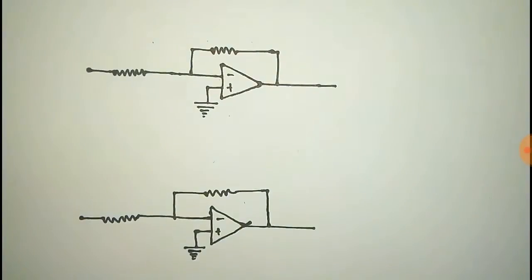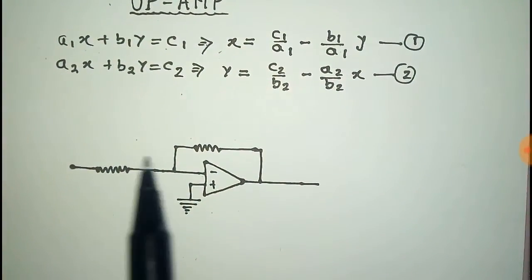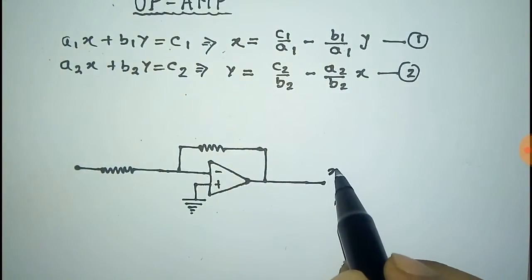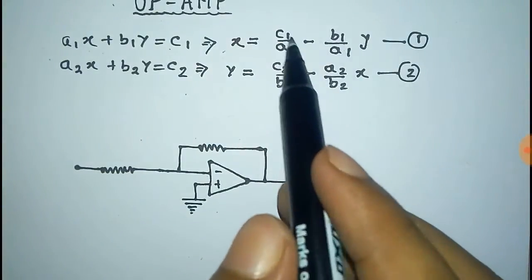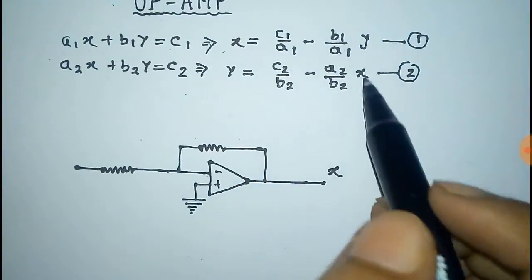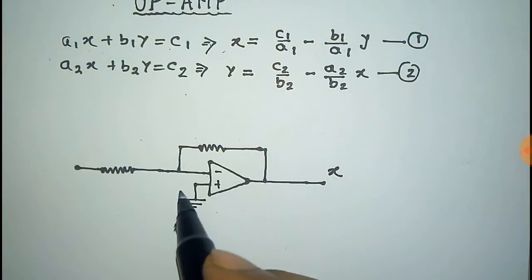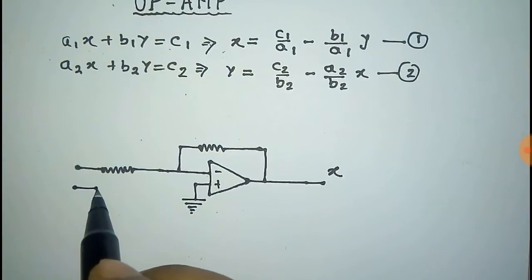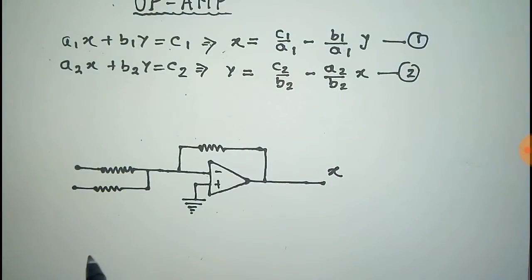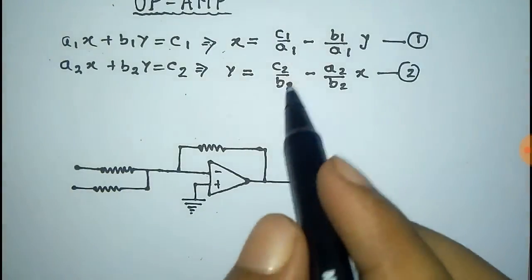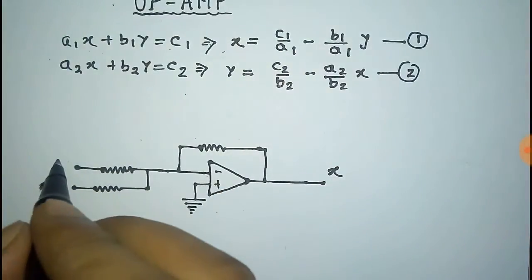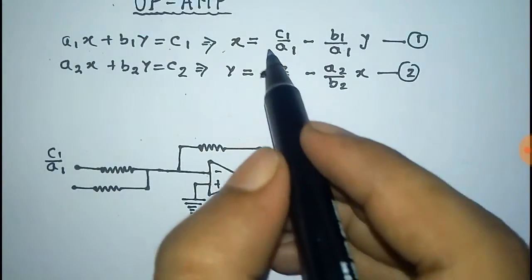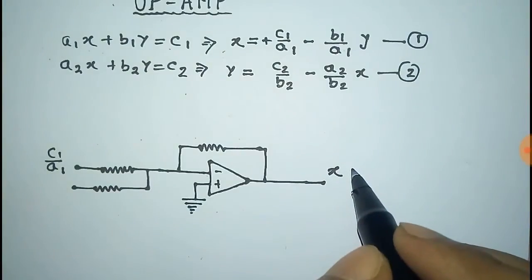At the first op-amp, x is the output, so give x at the output. The inputs are c1/a1 and −(b1/a1)·y, so there are two inputs and we need two input terminals. This is an adder op-amp — it will add two inputs. The first input is c1/a1.